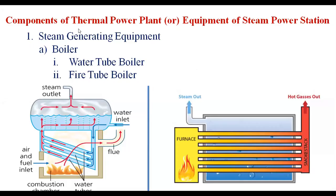Today we are going to discuss the components of the thermal power plant, or simply the equipment of a steam power station. The major components are: coal storage plant, coal handling plant, ash storage plant, ash handling plant, boiler, superheater, economizer, air preheater, turbine, condenser, alternator, and exciter.